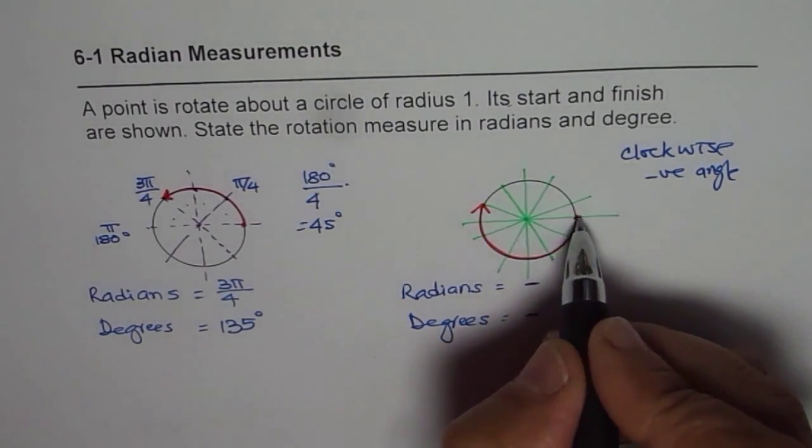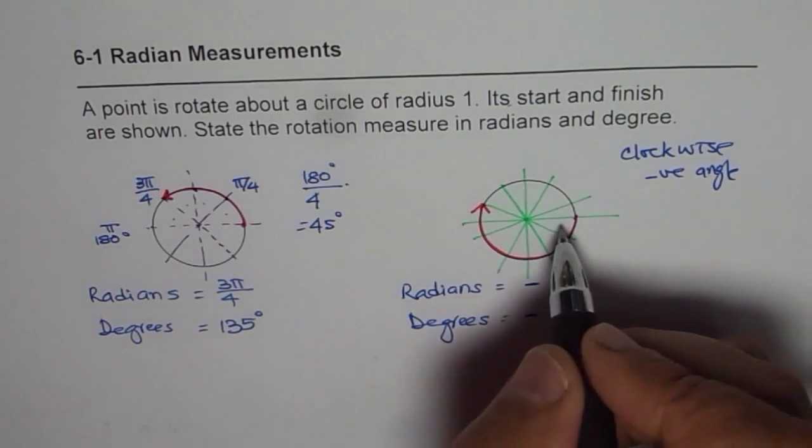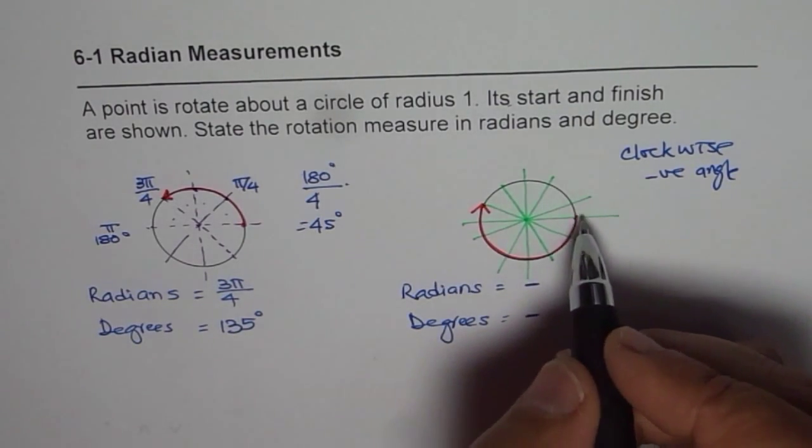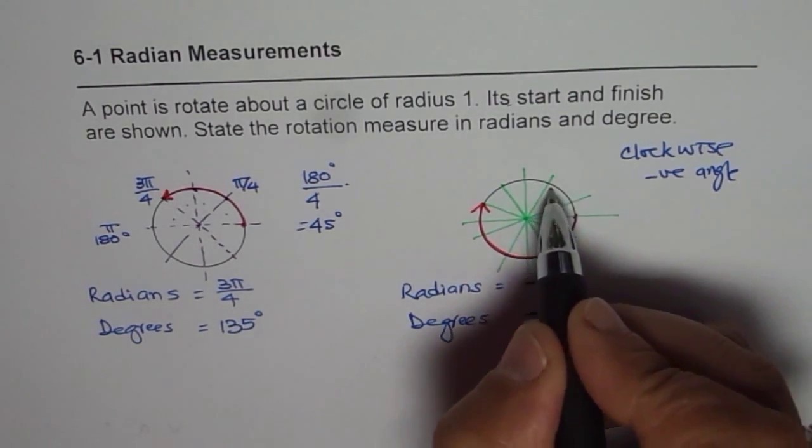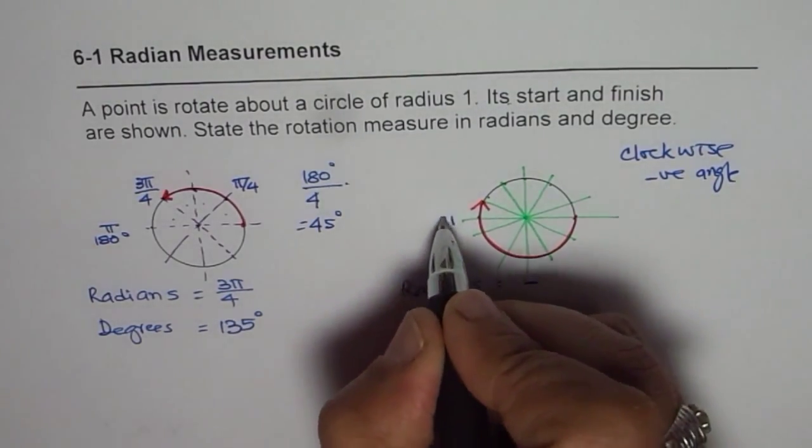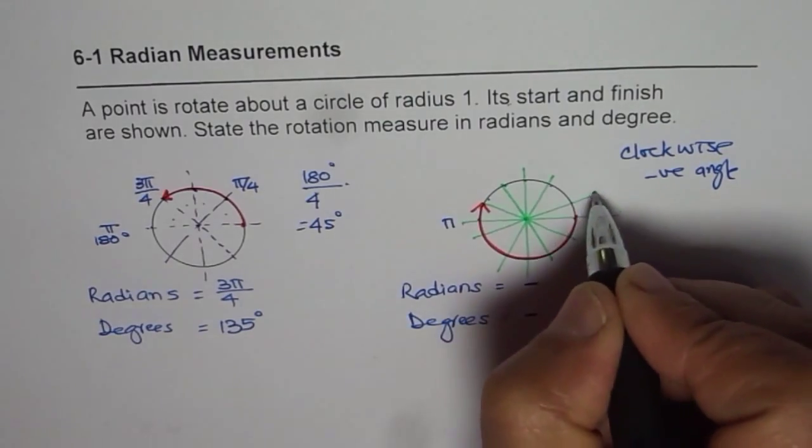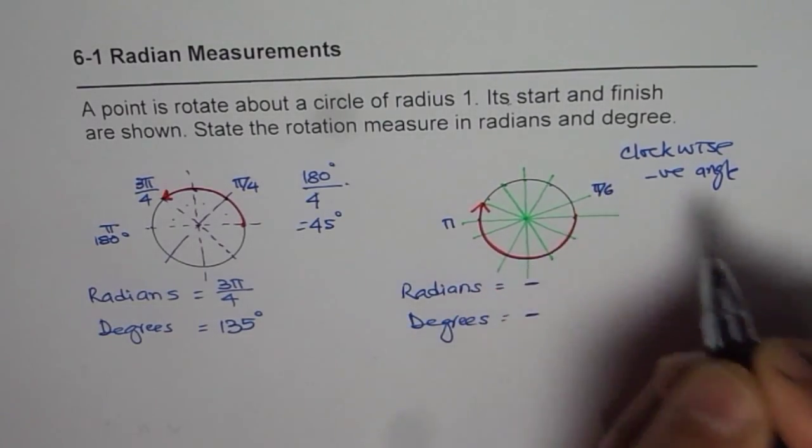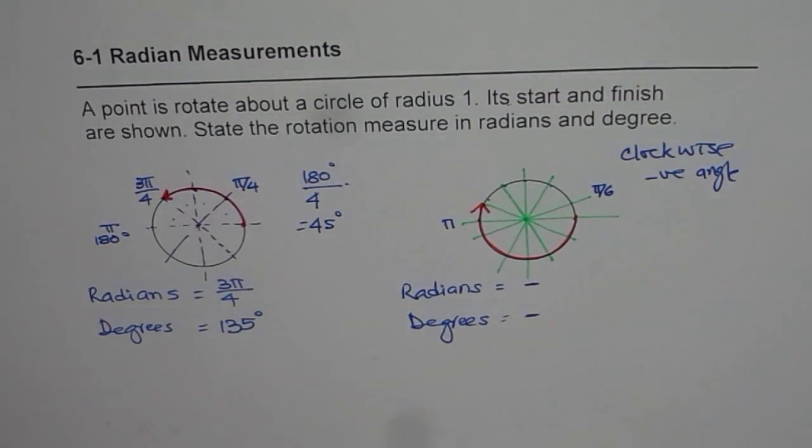Now here again, we have this pi. So this pi has been divided into how many parts? Let's count like this first. 1, 2, 3, 4, 5, 6 parts. So the pi has been divided into 6 parts. Each is pi by 6. Do you see that? Each is pi by 6.